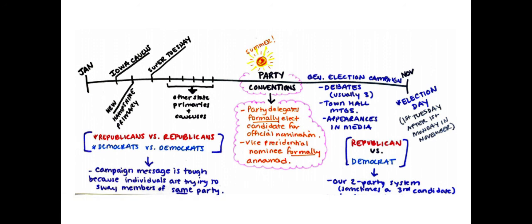Then we reach the general election, which involves a lot of debates — usually three televised debates plus vice presidential debates. There are also town hall meetings where networks like CNN, Fox, or NBC invite residents to sit in the audience in a circular format and ask questions live. Election day is always the first Tuesday after the first Monday in November, because that's what the Constitution decrees. There's a TED-Ed video about why we vote on Tuesdays, which has to do with old-fashioned customs from the first of the month.